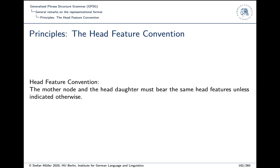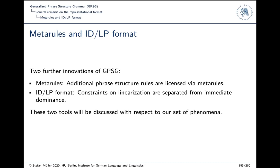The Head Feature Convention states that the mother node and the head daughter must share the same head features unless indicated otherwise. Whatever is relevant in terms of features is taken over from the head daughter to the mother node on the left-hand side. But you can state at the left-hand side that there is something different — you can, so to say, overwrite the head features.